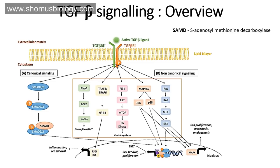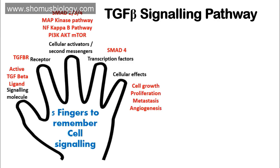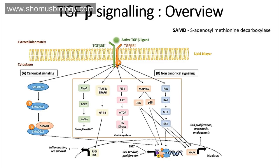Now let's talk about the overview of TGF beta signaling. As mentioned, there are two different types of pathways: the canonical pathway and the non-canonical pathway. The canonical pathway involves SMAD 2, 3, and 4 proteins together. SMAD stands for S-adenosylmethionine decarboxylase enzyme. These proteins are involved in the activation and transcription of their target genes. The remaining four or five other pathways are non-canonical, meaning unconventional.